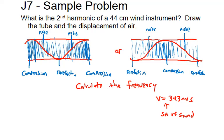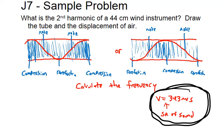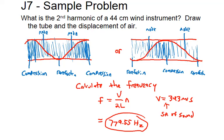Let's try a practice problem: a wind instrument is 44 centimeters — convert to 0.44 meters — second harmonic, and the speed of sound in air is 343 meters per second. Go ahead and pause the clip to try it. The answer: with n = 2, L = 0.44 m, using nv / 2L, the frequency works out to 779.55 Hz for the second harmonic of this wind instrument.